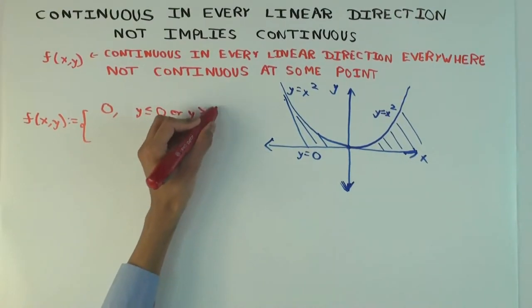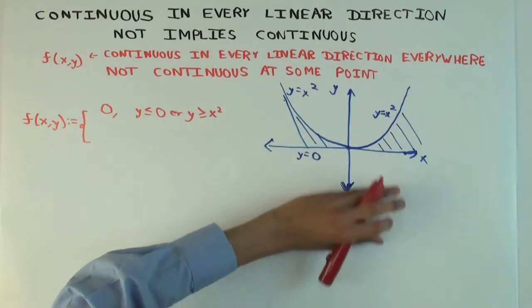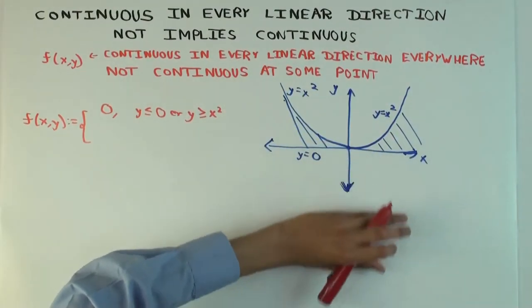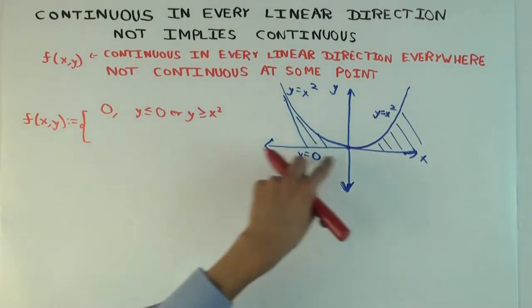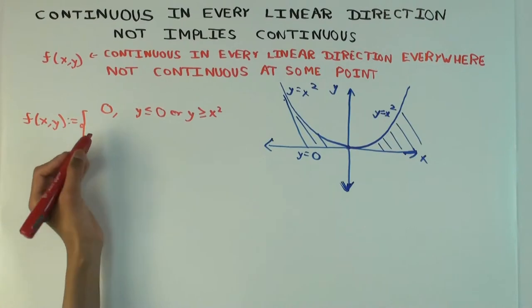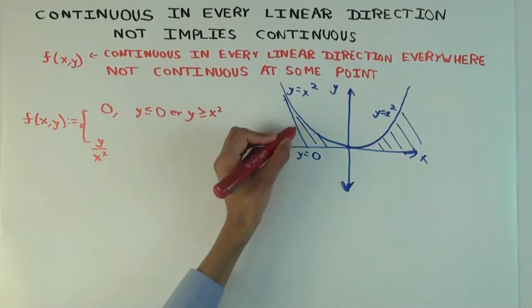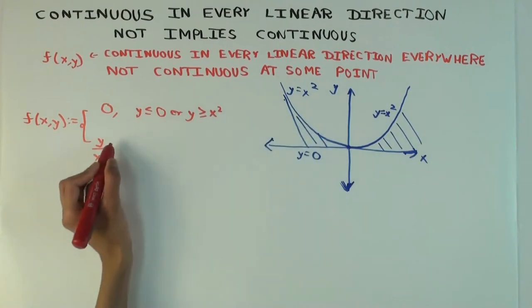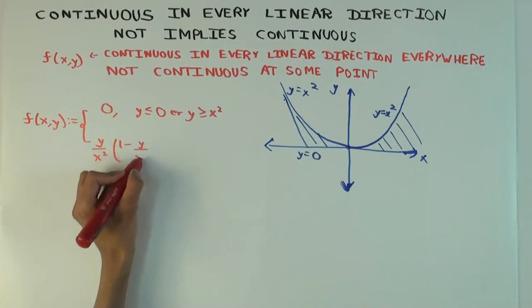As I said, it's zero on the region above the parabola, it's zero on the region below the x-axis, and it's also zero at the boundaries for continuity reasons. At the other points — the points in the shaded region — it's y over x squared times one minus y over x squared.